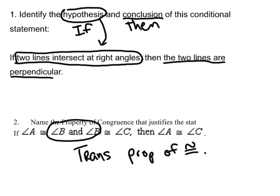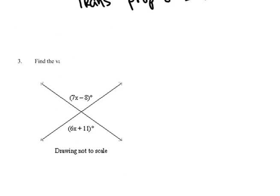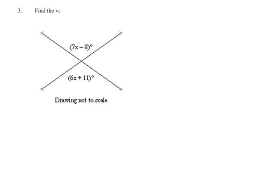Alright, moving on to number three. Find the value of x is what it's supposed to say, drawing is not to scale. Notice that we have intersecting lines. Two non-adjacent angles formed by intersecting lines are vertical. Vertical angles are congruent. Therefore, we would say 7x minus 8 would equal 6x plus 11. We solve for x, subtract 6x from both sides, so we have 1x minus 8 equals 11.